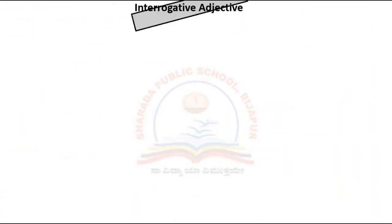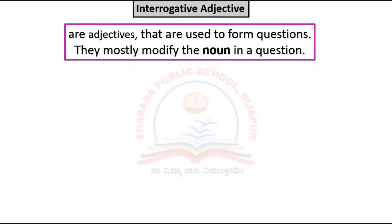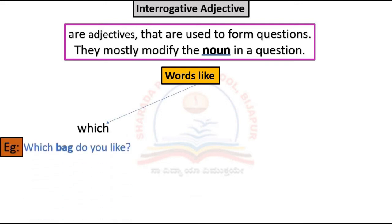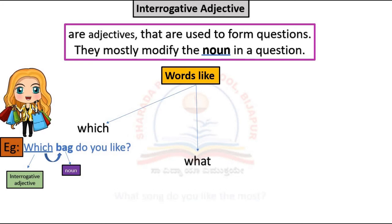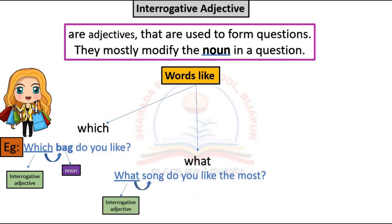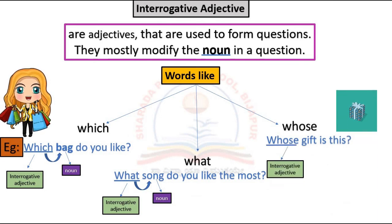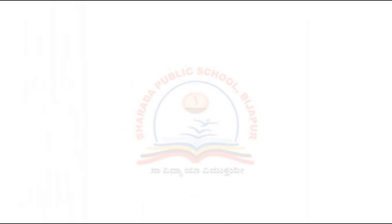Interrogative adjectives are used to form questions and mostly modify a noun. 'Which' — example: 'Which bag do you like?' Here 'which' is an interrogative adjective modifying the noun 'bag.' 'What' — example: 'What song do you like the most?' Here 'what' modifies 'song.' 'Whose' — example: 'Whose gift is this?' Here 'whose' modifies 'gift.'